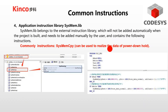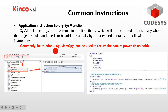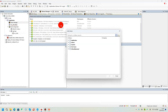Next, the Application Instruction Library. It belongs to the External Instruction Library, which will not be added automatically, so you have to add it yourself. Common instructions include SysMEM CPY, which can be used to realize the data of power-down hold. Let's see how to add SysMEM Lib.